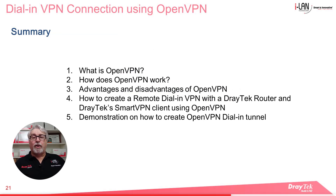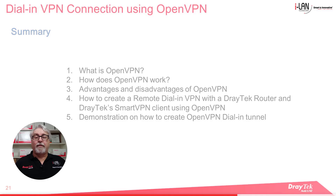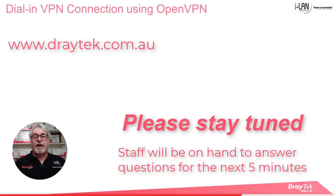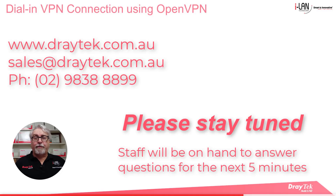To summarise: today we started by looking at what OpenVPN is and how it works, along with some of the advantages and disadvantages. Then we covered the steps required to set up a dial-in VPN tunnel using OpenVPN, and went through a demo using a DrayTek Vigor2865 router as the VPN server and the DrayTek SmartVPN client as the VPN client. For more information about DrayTek products, please check out www.draytek.com.au, email sales@draytek.com.au, or call 02 9838 8899. Please like and subscribe, and click the bell for notifications.